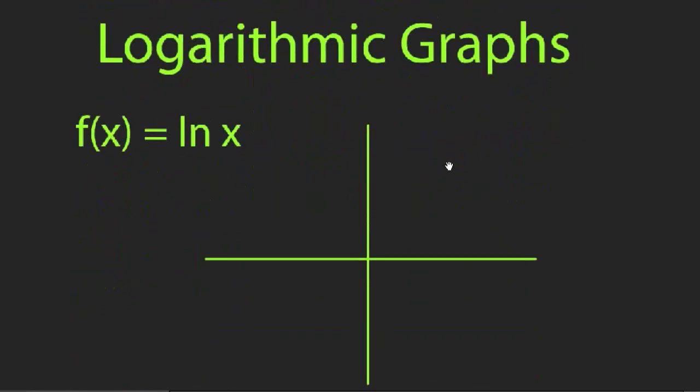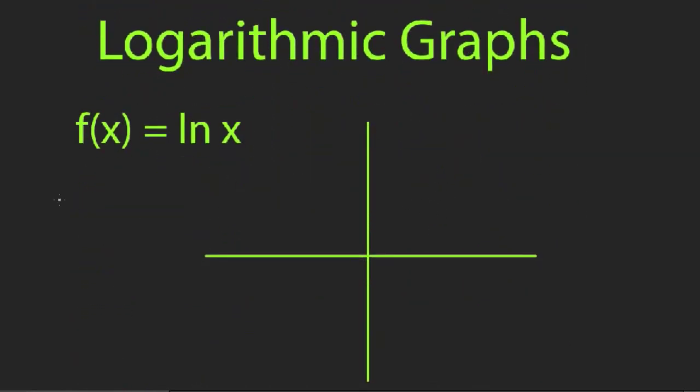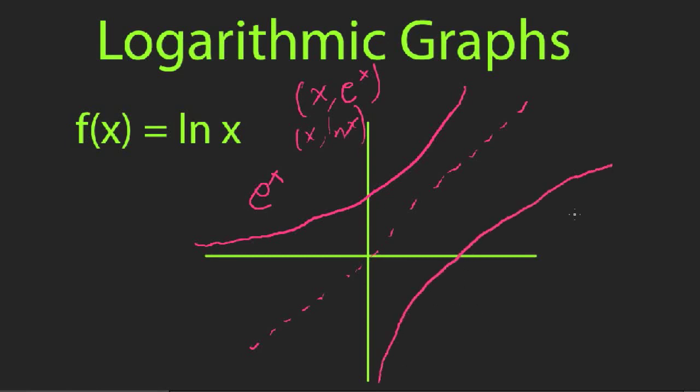Let's talk about graphs of logarithms. So I'm going to draw an exponential graph here first. Let's call this e to the x. And since ln of x is going to be the inverse of that, the graph of ln of x is a reflection across the line y equals x. And that's because we're just switching all the points. Every point that we have that's x comma e to the x, we're going to switch those and it's going to become x comma ln of x. So you switch x and y, so you end up with a graph that looks like this.